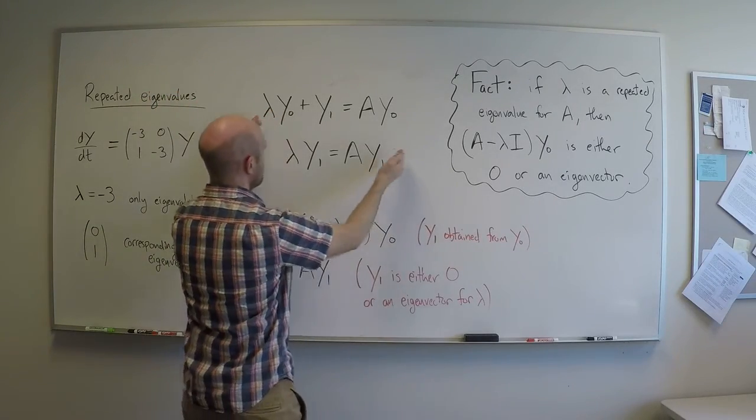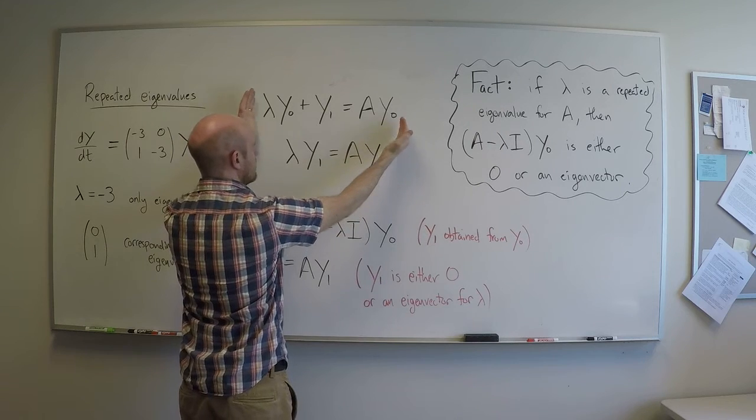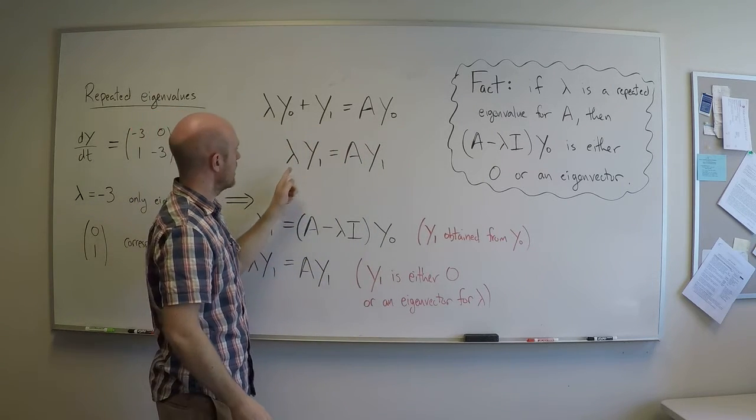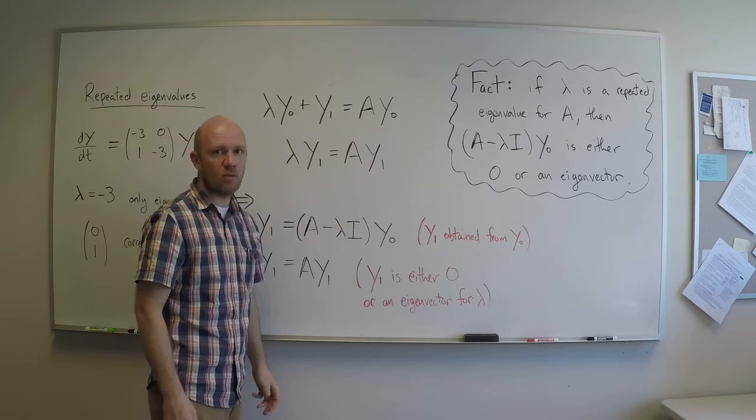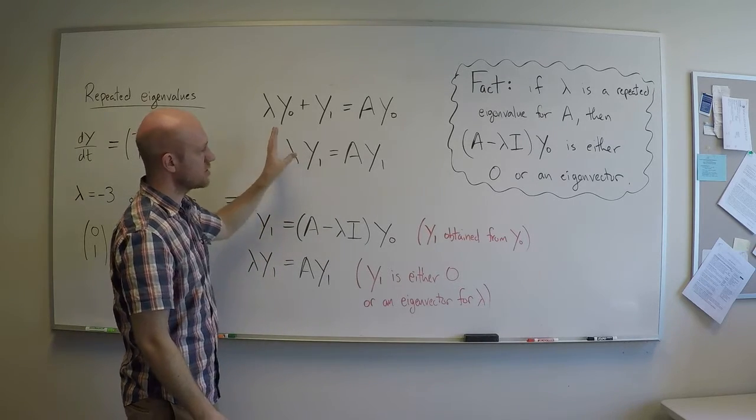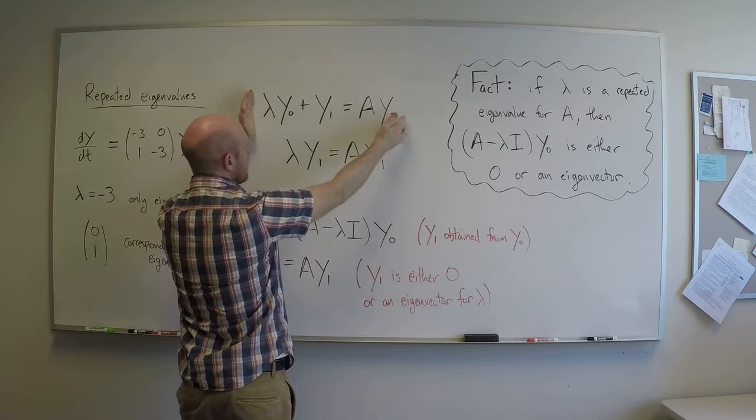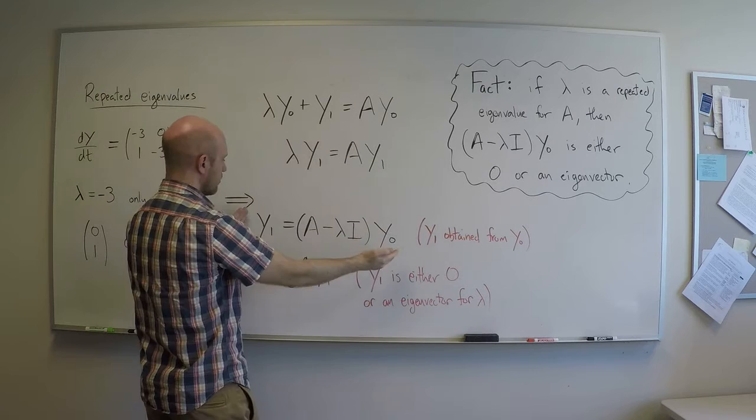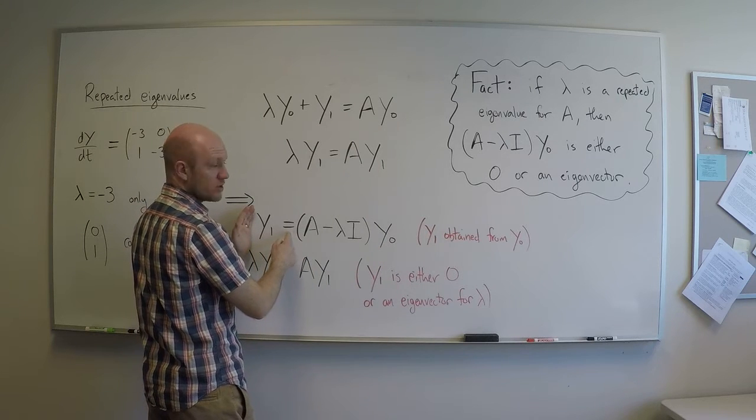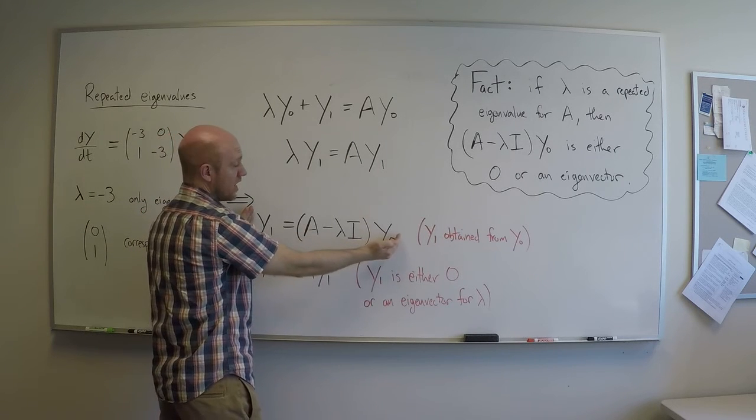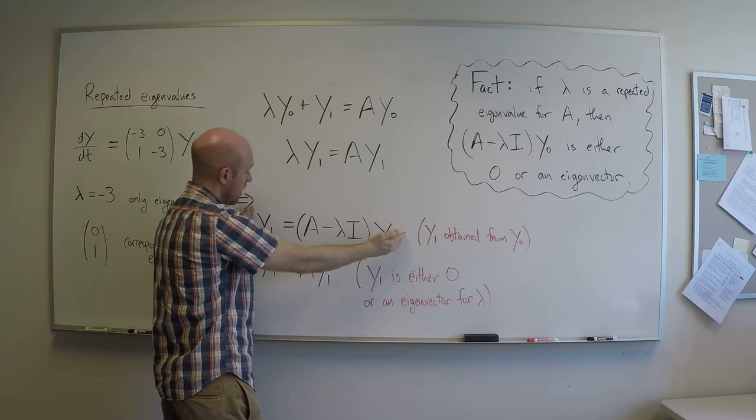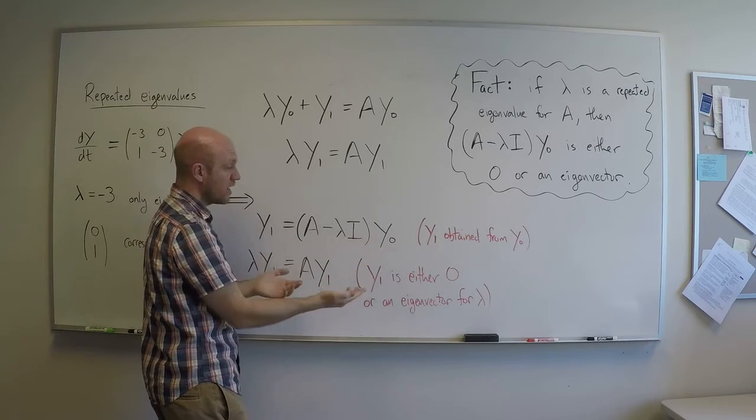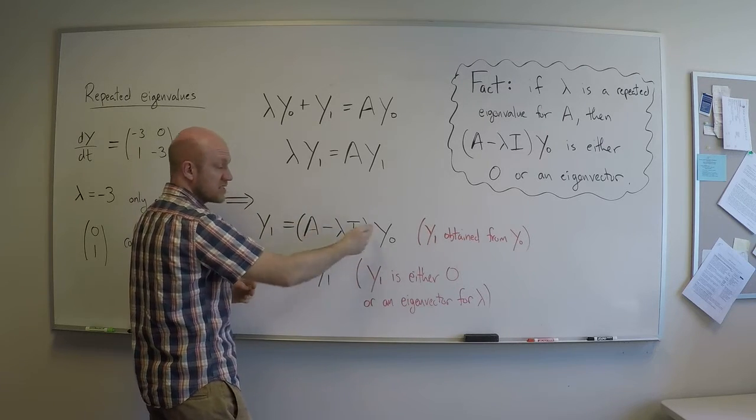So I copied over the consequences of the ansatz. Here they are right here. λy0 + y1 = Ay0, and λy1 = Ay1. Let me rewrite these just a little bit so we can make sense of them. So I'm going to take this equation, and I'm going to shift all the y0 stuff over to one side, and I'll rewrite that as y1 = (A - λI) applied to y0. How do we think of this? Well, we think of y1 as being a vector which is obtained from y0 by applying this A - λI, that redundant, that degenerate matrix that we get when we plug in the eigenvalue lambda there.